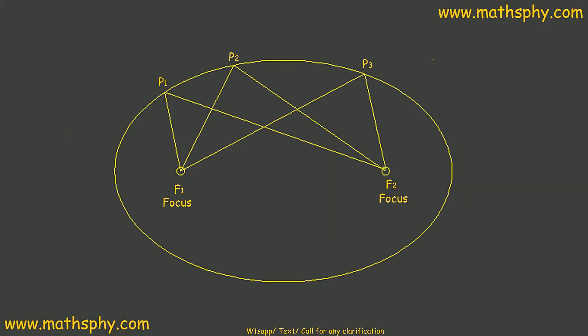Don't worry, I'll try to make it as simple as possible. Any diagram is a set of points, and this ellipse has millions and trillions of points putting together giving it this shape. It looks like a circle which has been stretched on two opposite sides and becomes an ellipse. It has two foci — plural of focus.